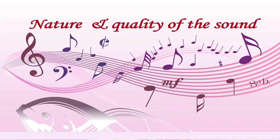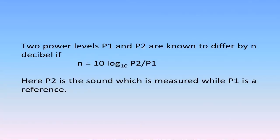Now, let us discuss about the nature of sound, the quality of sound, and how to measure sound. Sound level is measured in units of decibel — deci means one tenth and bel is the level of sound, named after the inventor of the telephone, Alexander Graham Bell. It is a unit which compares two levels of power of two sources. Two power levels p1 and p2 are known to differ by n decibels if n equals 10 log base 10 of (p2 divided by p1), where p2 is the sound being measured and p1 is the reference.